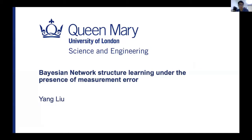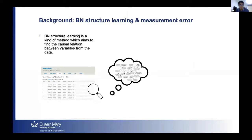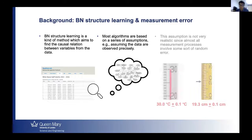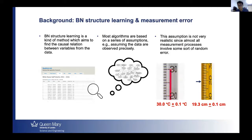Hi, I'm Yang. I'm also a second-year PhD student in the RIM group. Today I want to present my recent work about improving Bayesian network structure learning in the presence of measurement error. Bayesian network structure learning is a method which aims to find the causal relationships between variables from data and express these relationships using a Bayesian network. Currently most structure learning algorithms rely on a series of assumptions — for example, they normally assume the data are observed precisely, meaning the data can trustfully reflect the underlying population probability.